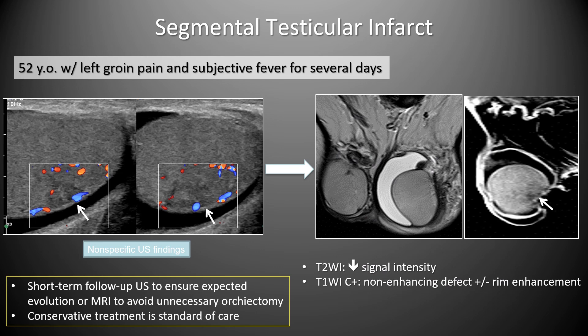Another 52-year-old with left groin pain and fever showed a wedge-shaped area of decreased echogenicity within the periphery of the testis without significant color Doppler flow. MRI showed a hydrocele on T2-weighted imaging and a wedge-shaped area of decreased enhancement corresponding to the ultrasound finding — characteristic of testicular infarction. Short-term interval follow-up with ultrasound can sometimes be used rather than MRI, and conservative treatment is the standard of care.